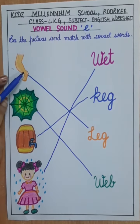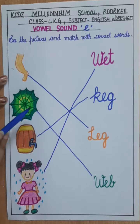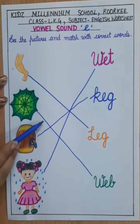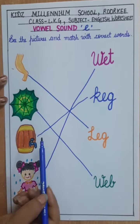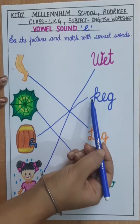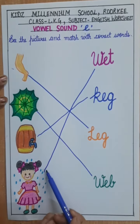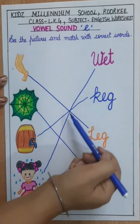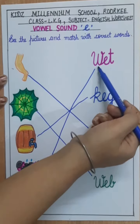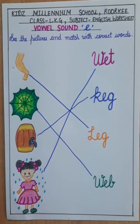L-E-G leg, W-E-B web, K-E-G keg, and W-E-T wet. So you have to do this work in your English notebook in the same way.